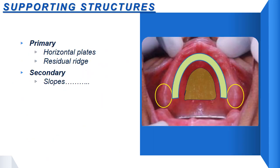The supporting structures of the maxillary arch include primary and secondary supporting structures. An important point to remember: whichever location of the jaw is perpendicular to the masticatory forces is considered the primary stress-bearing area. For that reason, the central portion of the hard palate — the horizontal plates of the palatal process of the maxilla — is considered the primary supporting structure, followed by the residual alveolar ridge. Secondary supporting structures include the slopes of the maxillary anterior and posterior areas and the posterior palatal area.